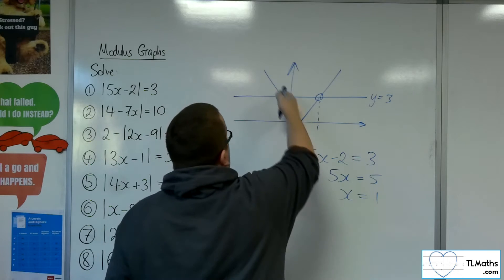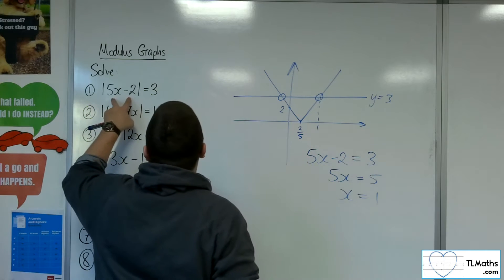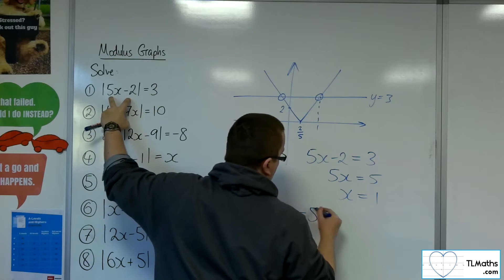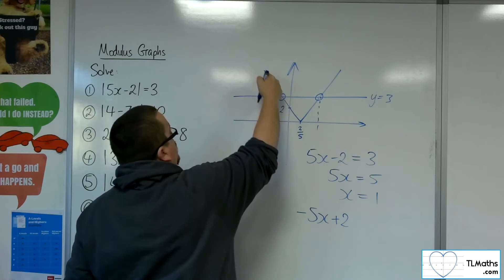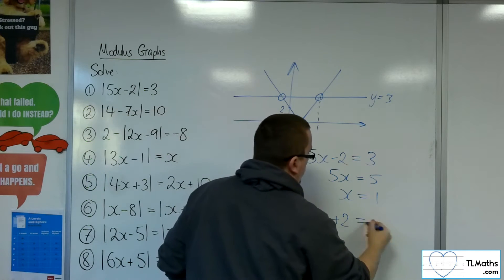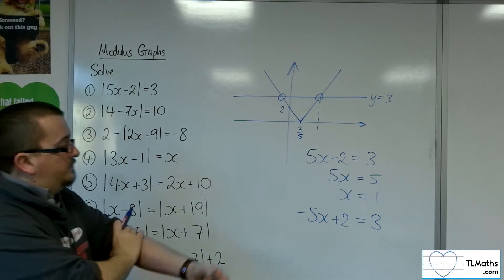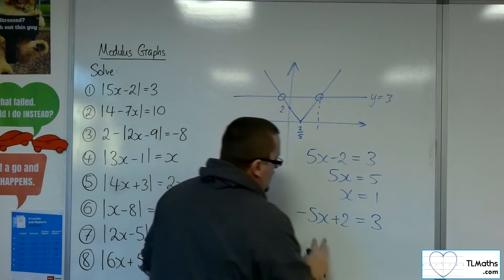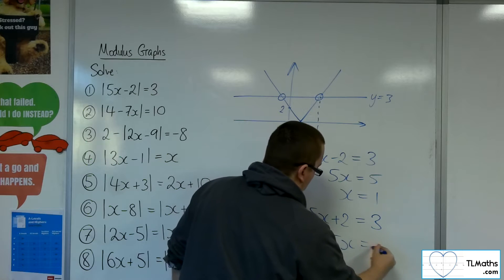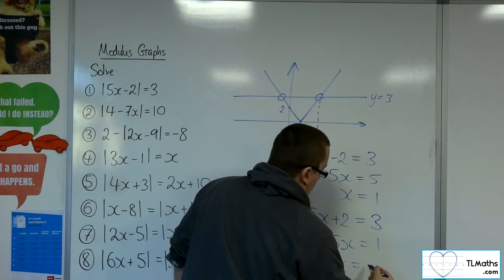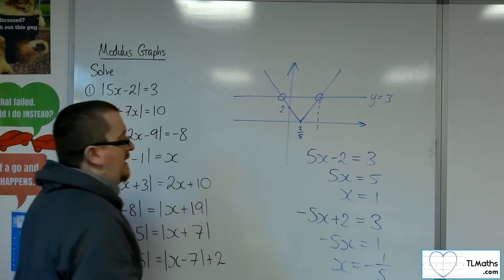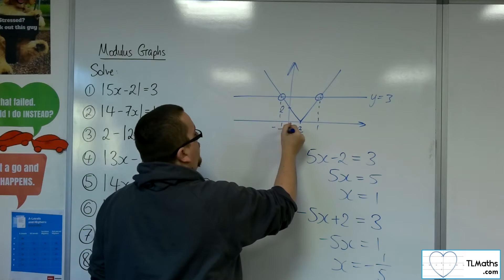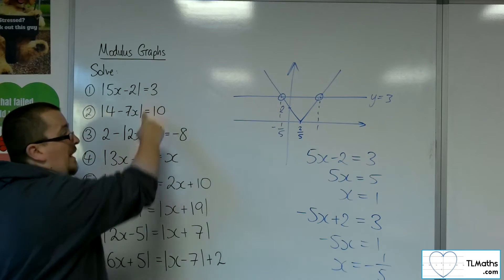This line has negative gradient, so it will have the equation y equals minus 5x plus 2. Minus 5x plus 2 equals 3 — that's intersecting with y equals 3. It's just like changing the sign of one side of the equation. Take 2 from both sides, then divide both sides by minus 5, so x equals minus 1 fifth. So x equals 1 and x equals minus 1 fifth are the solutions to that first equation.